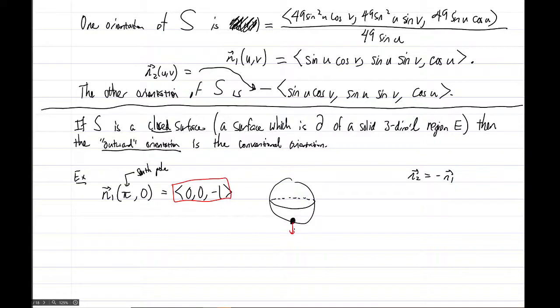And okay, that means that this n1 orientation is so this arrow is drawn starting from the point at the south pole out away from the center of the sphere. So actually n1 is outward, and then n2, which would point in the opposite direction, n2 in this example would be inward.